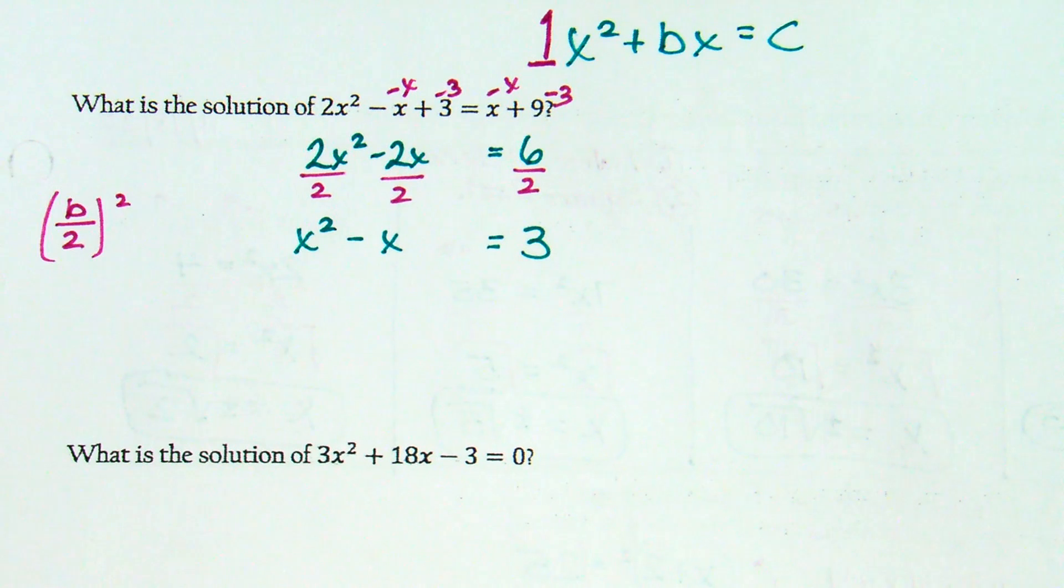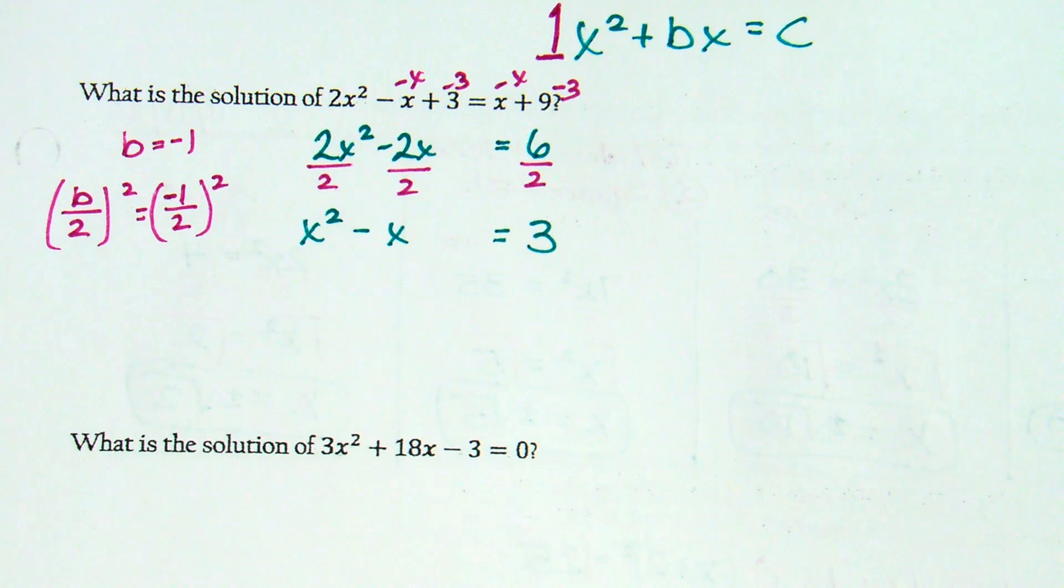But it means we're going to add b over 2 squared to both sides. So what is b currently? b in front of x is currently negative 1. So this is going to be negative 1 divided by 2 quantity squared. Negative 1 divided by 2. Just leave it as is. Negative 1 divided by 2 is negative 1 half squared. How do I do negative 1 half times negative 1 half? Negative times negative makes it positive. 1 times 1? 1 over 2 times 2? 4. So this equals 1 fourth.